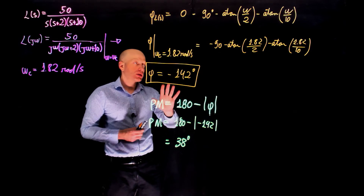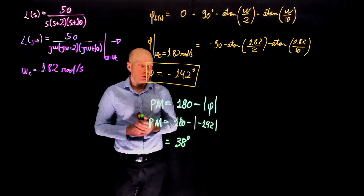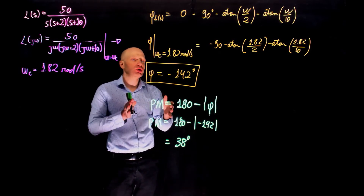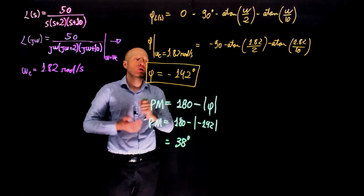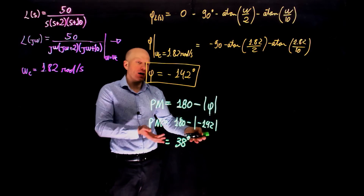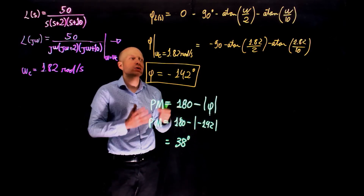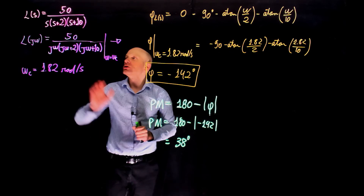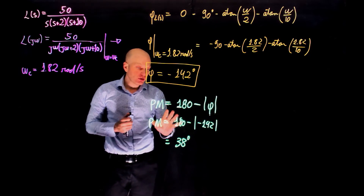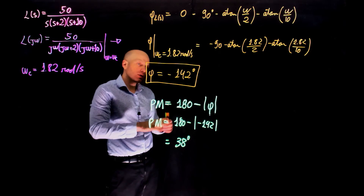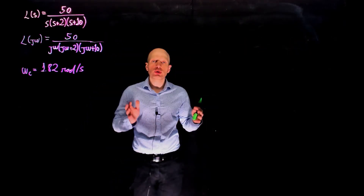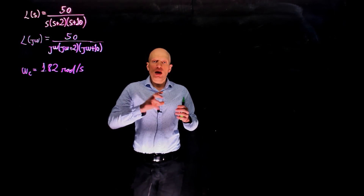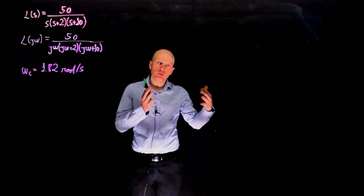A phase margin of 38 degrees means the system as it stands is closed loop stable. We would need to add 38 degrees to the current phase without changing the magnitude in order to reach the critical point of magnitude 1 and 180 degrees of phase, which is the negative 1 point on the Nyquist plot. If the phase margin were negative, the Nyquist plot would encircle negative 1 and the system would be closed loop unstable. To calculate the gain margin, we first need to find the frequency at which the phase reaches negative 180 degrees, then evaluate how far the gain is from 0 decibels.